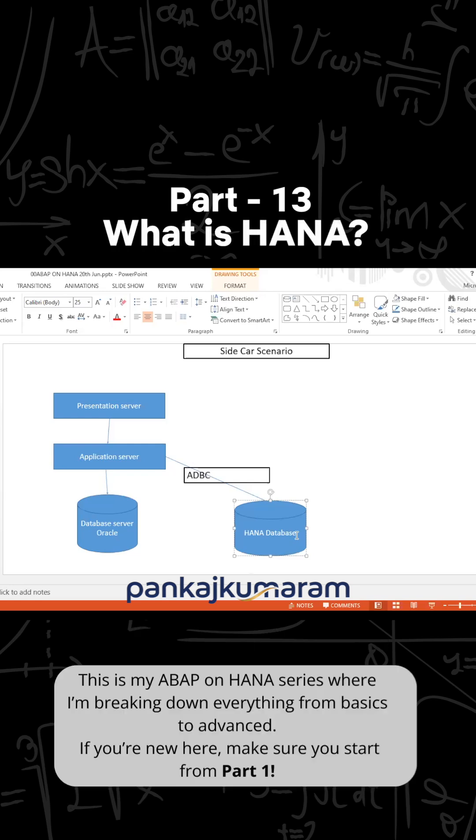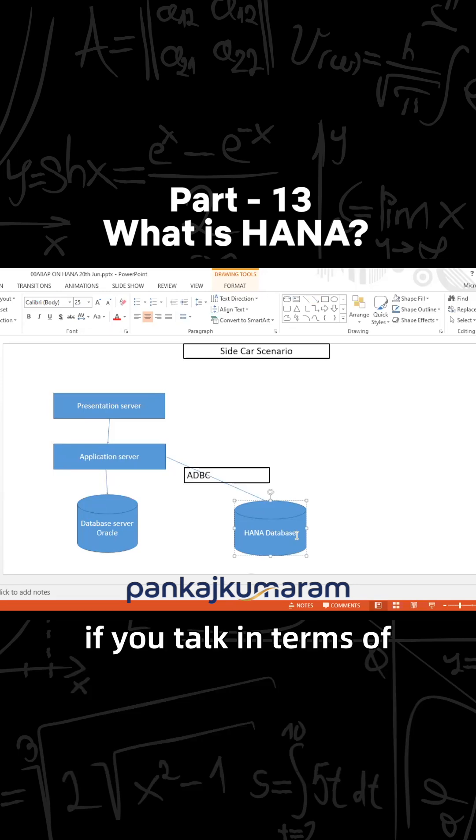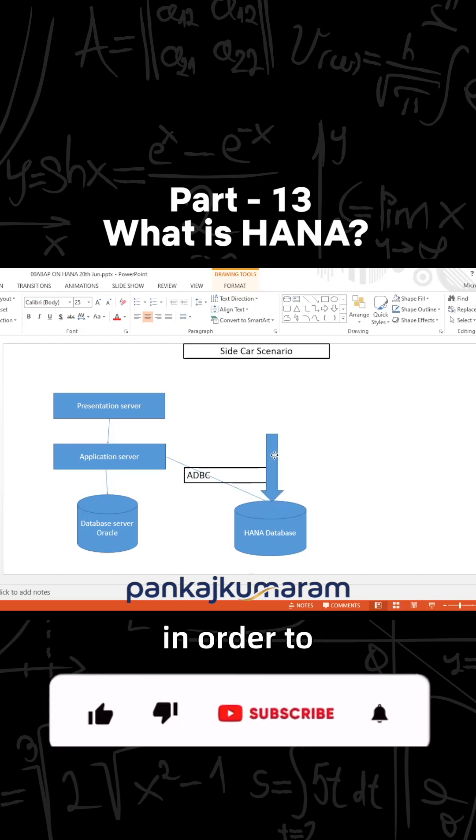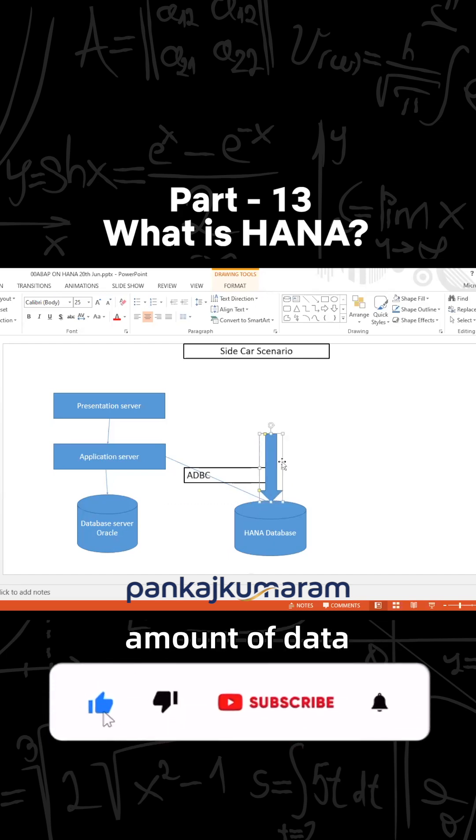The first migration in terms of HANA database - the complete migration was possible. HANA was generally introduced in order to display large amounts of data for analytical processing mainly.